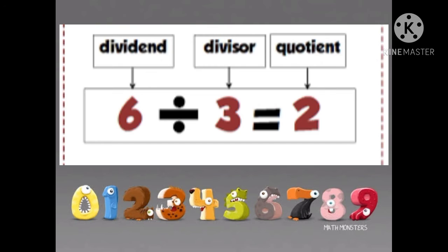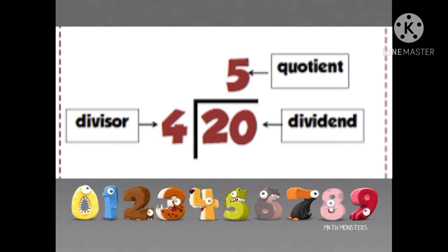The next one we will see is the vertical form. In this method, we have divisor 4, quotient 5, dividend 20. We get the remainder 0. So the answer is quotient 5. Like this, we do the long division method. I hope it is clear to everyone.